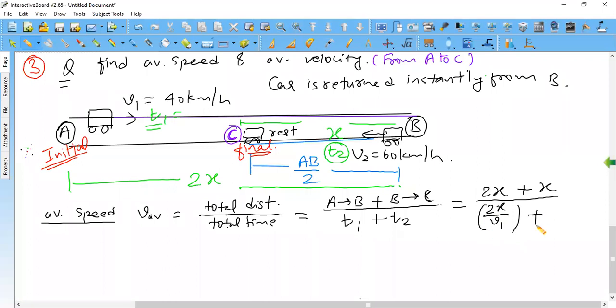And how do you write T2? X distance is V2 speed. So divide X upon V2. Take care of the last step.